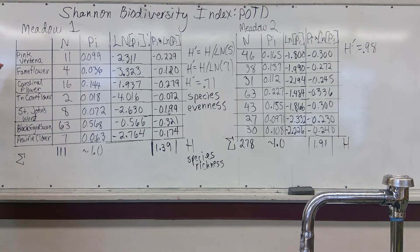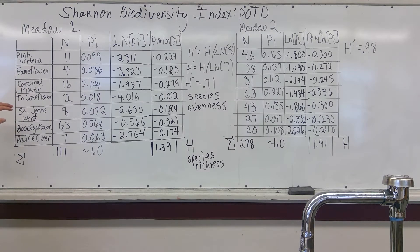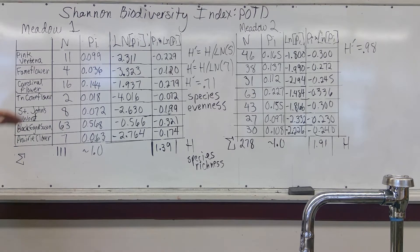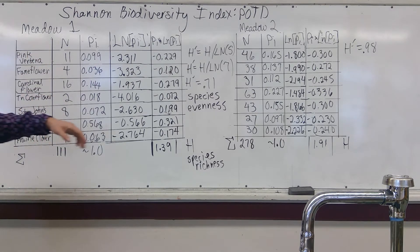In Meadow 1, we have seven flowers highly associated with these habitats: Pink Robinia, Fameflower, Cardinal Flower, Tennessee Coneflower, St. John's Wort, Black-Eyed Susan, and Prairie Clover. We've got a population count for each, denoted as N.